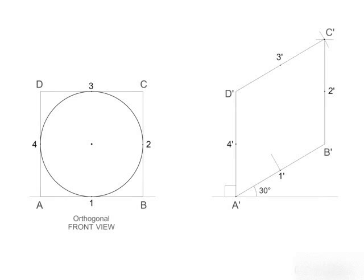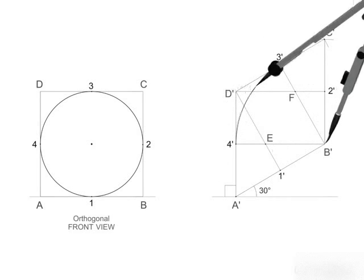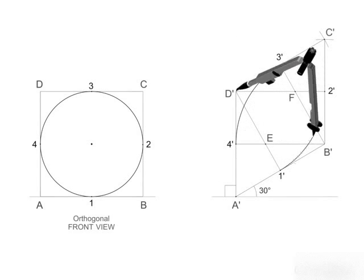Now join 1 dash D dash and 4 dash B dash and mark the intersecting point as E. Similarly mark intersecting point F on B dash 3 dash and D dash 2 dash.